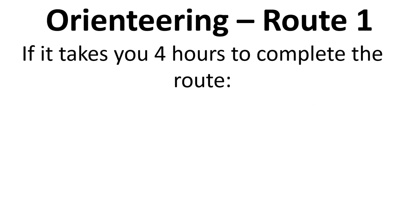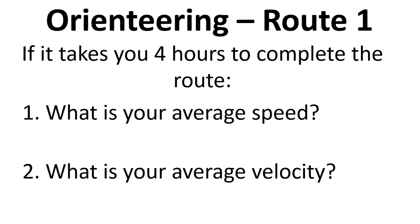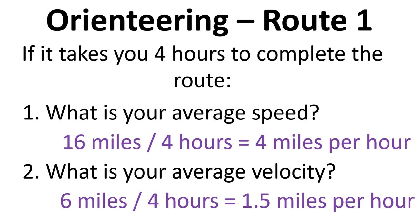So if it took me 4 hours to complete that route, what's the average speed and what's the average velocity? Well, speed is distance over time, so we've gone 16 miles total distance divided by 4 hours, so we've gone 4 miles per hour, that's our average speed. Now velocity is displacement over time and our total displacement is only 6 miles, so from the start point to the finish point we're only 6 miles away. So the average velocity is 1.5 miles per hour.